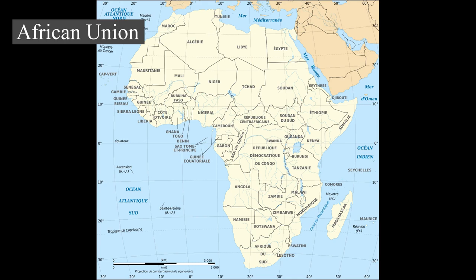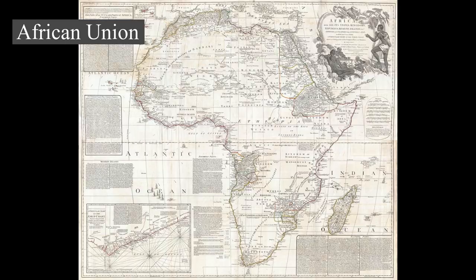Most of such violations occur for political reasons, often as a side effect of civil war. Countries where major human rights violations have been reported in recent times include the Democratic Republic of the Congo, Sierra Leone, Liberia, Sudan, Zimbabwe, and Ivory Coast.